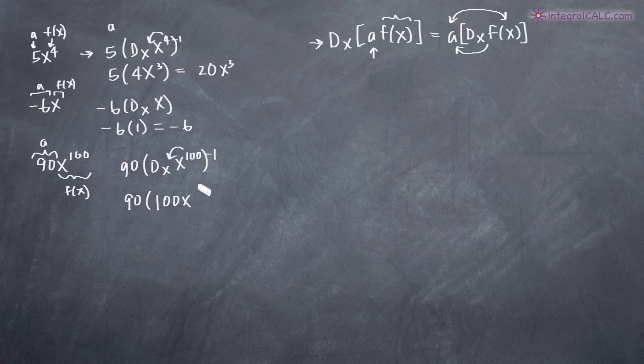So 100 minus 1 is 99. So that's the derivative of x^100 and then we just multiply together here this 90 times 100 which gives us 9,000. So we end up with a final answer of 9,000x^99.